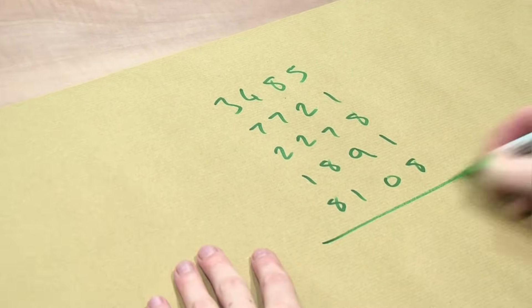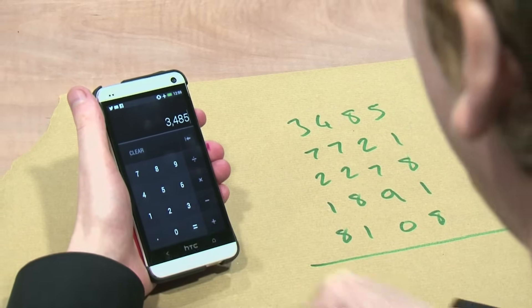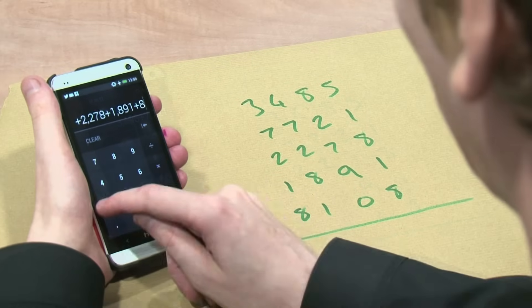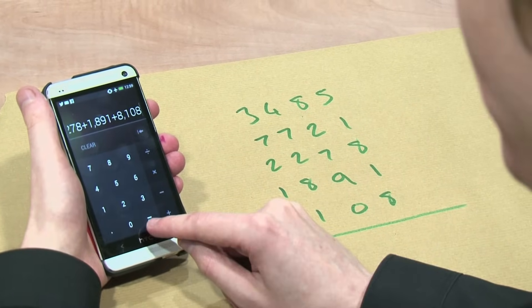Right. And we're going to add these together. We're going to add these together. 3, 4, 8, 5, 7, 7, 2, 1, 2, 2, 7, 8, 1, 8, 9, 1, and 8, 1, 0, 8. There you go. So let's see what that is? Let's see what the answer is.